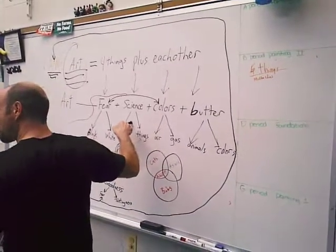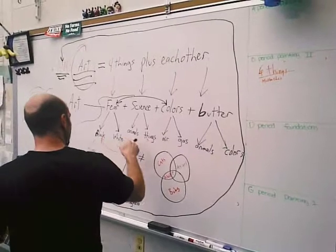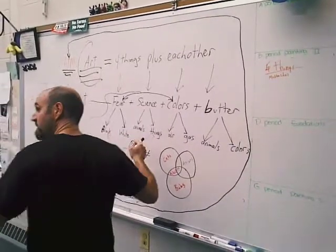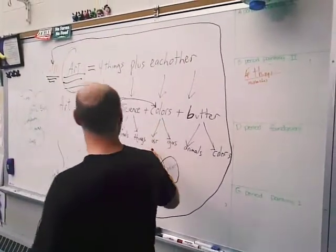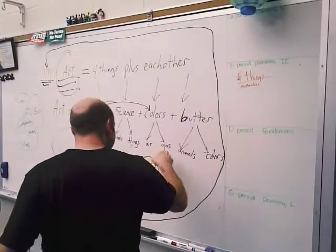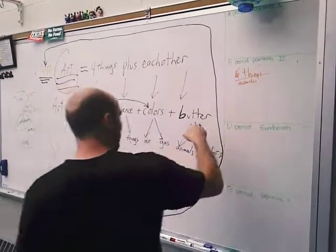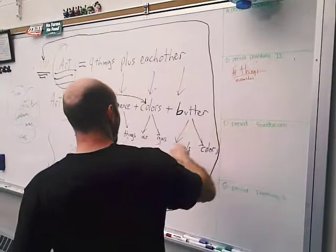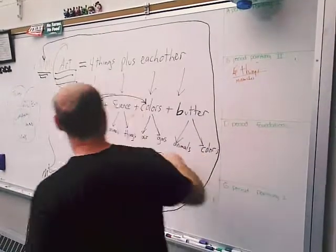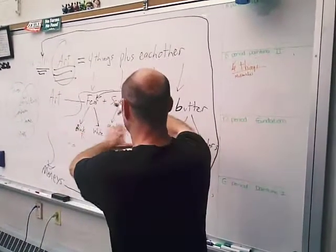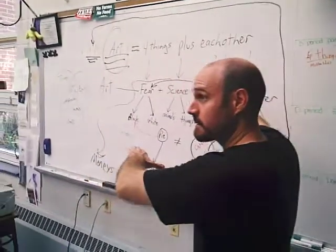Science is made out of animals and things. Colors is air and gas. And finally we have butter, which is also animals and colors, which is the thing plus other things to equal the thing that they're plusing. Okay.